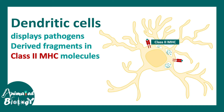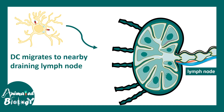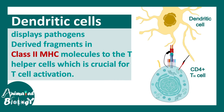Dendritic cells are motile, so they move to the nearby lymph node where they can interact with CD4-positive T helper cells, displaying their antigen on a class 2 MHC molecule. This eventually leads to activation of the T helper cell.